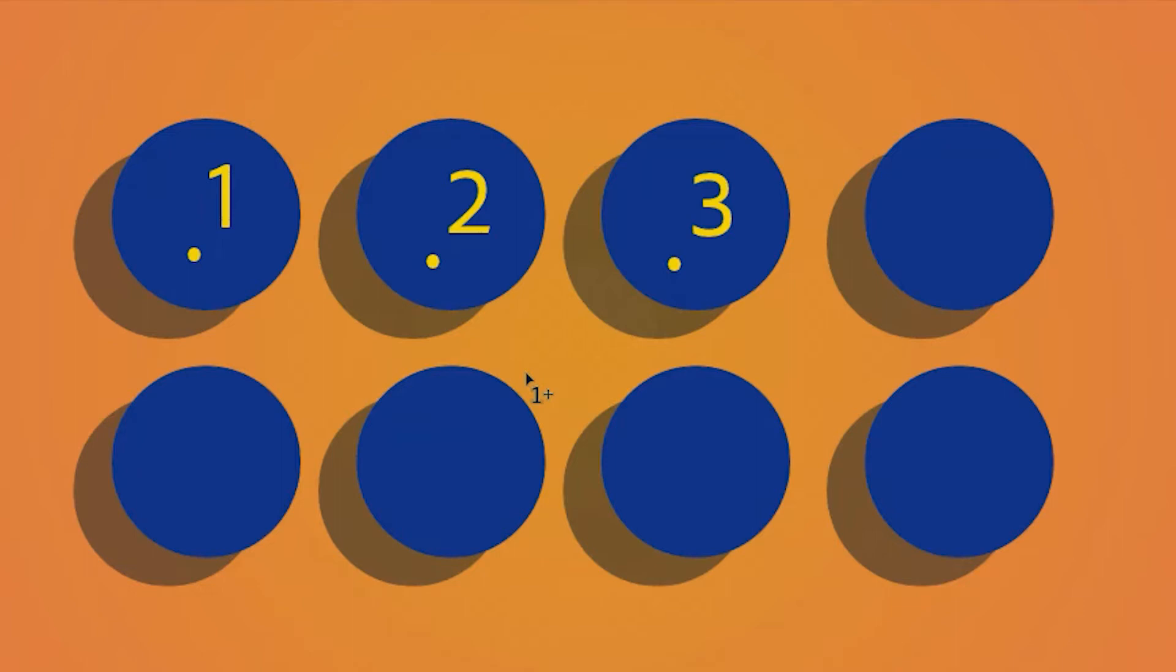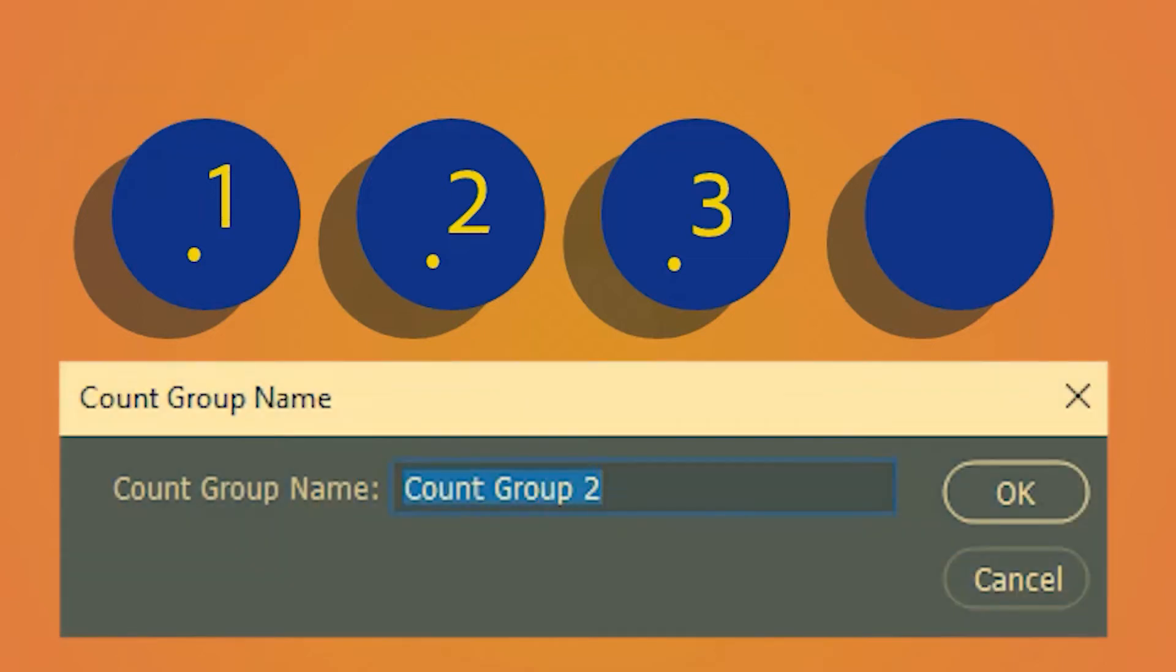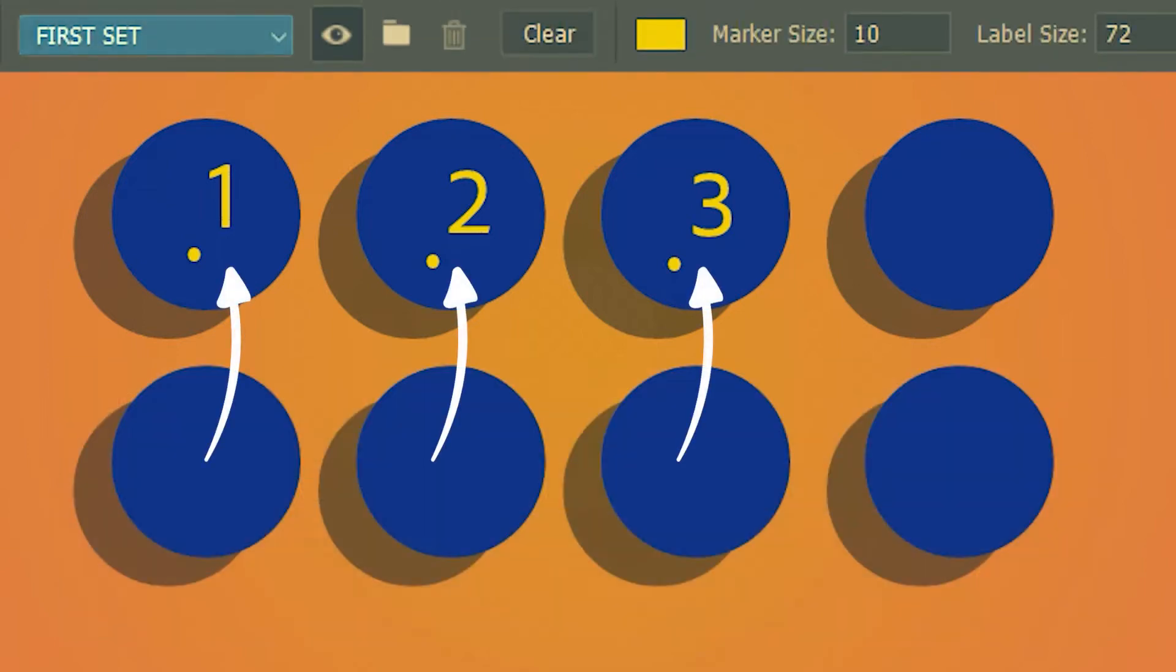Now the counters automatically form a group which you can rename over here. I'm going to name it first set. So these three counters belong to a group called first set.